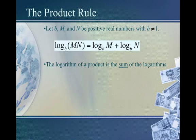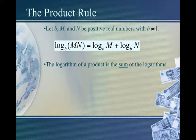By and large, you guys are going to find this stuff pretty easy, I suspect. So the product rule: if we have log base b of m times n, then using the product rule, we can rewrite this as log base b of m plus log base b of n. In other words, the logarithm of a product is the sum of the logarithms.